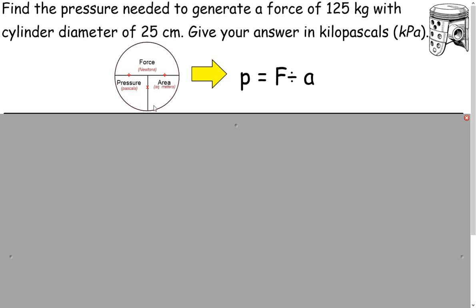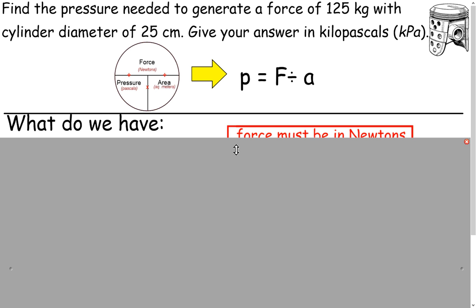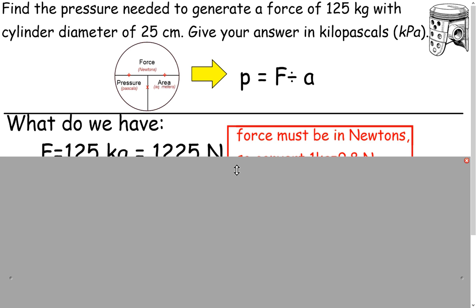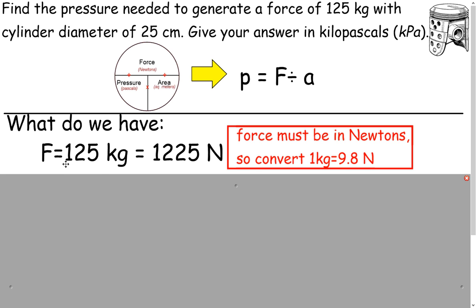So we're going to find the pressure, which is going to be in pascals, and it's force in newtons divided by area in meters squared — but we have centimeters, so we're going to have to do a little bit of converting. Force must be in newtons. We have 125 kilograms for force. We know that one kilogram is 9.8 newtons, so if we take 125 kilograms and multiply by 9.8, we get 1,225 newtons.